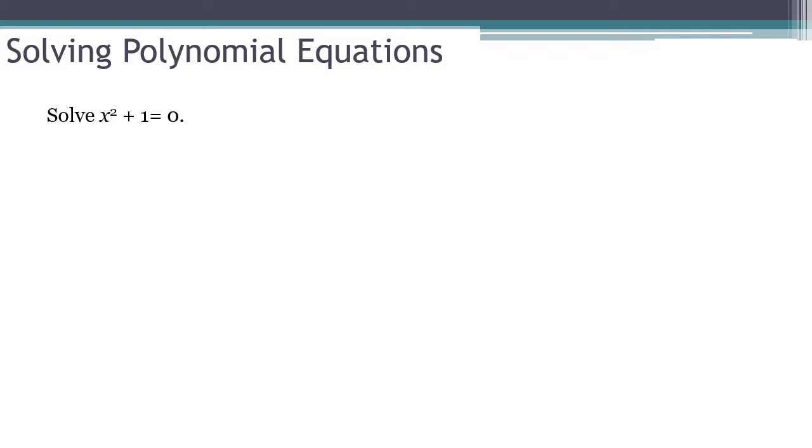This is another one you've got to be a little prepared for. It's already equal to zero, which is great. So I'm starting to think about factoring. And that thing on the left-hand side, it's the sum of two squares.